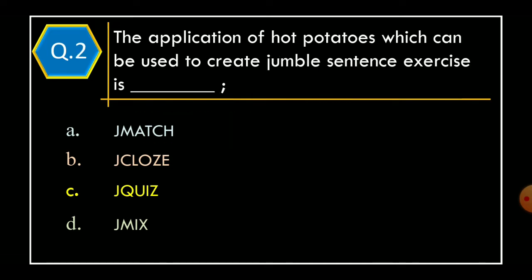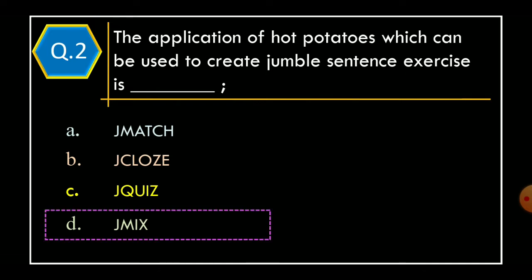Question 2. The application of Hot Potatoes which can be used to create a jumble sentence exercise is: Option A, J-Match; Option B, J-Close; Option C, J-Quiz; Option D, J-Mix. And the correct option is Option D, J-Mix.